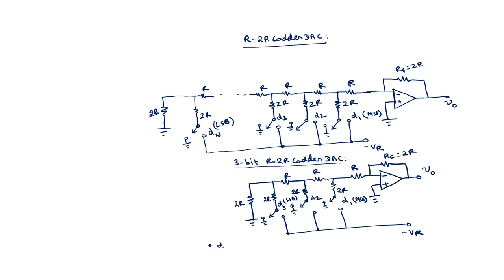Let us consider first the case where D1, D2, D3 equals 100. Here, if a D value is 1 it is connected to minus Vr; otherwise it is connected to ground. So for the input 100: D1 is connected to minus Vr, while D2 and D3 will be grounded.